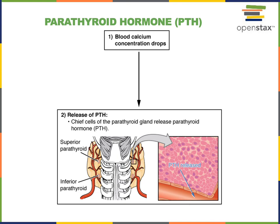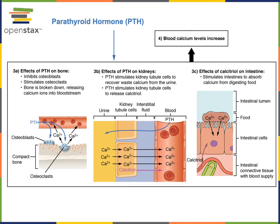Parathyroid glands are four small glands on the posterior of the thyroid gland that respond to hypocalcemia — that is, low blood calcium concentration. When blood calcium concentration drops, the parathyroid gland releases parathyroid hormone, abbreviated PTH. PTH binds to receptors on the surface of cells in the bone and in the kidneys. Parathyroid hormone inhibits osteoblasts and stimulates osteoclasts in bone, leading to the release of calcium from the bone.